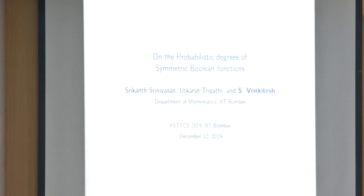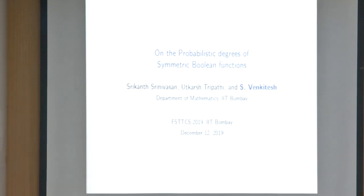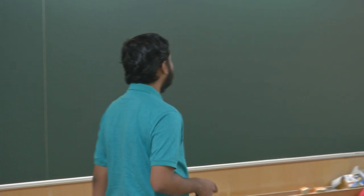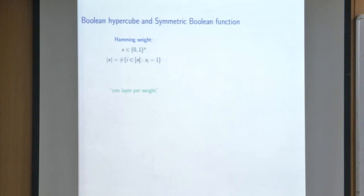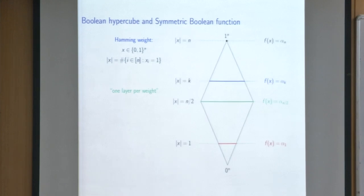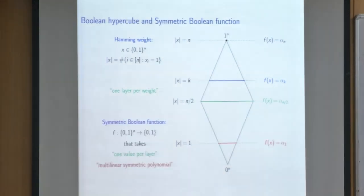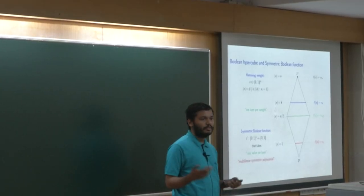The talk is about probabilistic degrees of symmetric Boolean functions, joint work with Srikant and Utkarsh. The domain of these functions is the Boolean hypercube. Using the Hamming weight function — the number of ones in a vector — we can partition the hypercube into layers, one per weight. Symmetric functions take exactly one value per layer. Their polynomial representations are symmetric and multilinear, meaning all monomials are square-free.